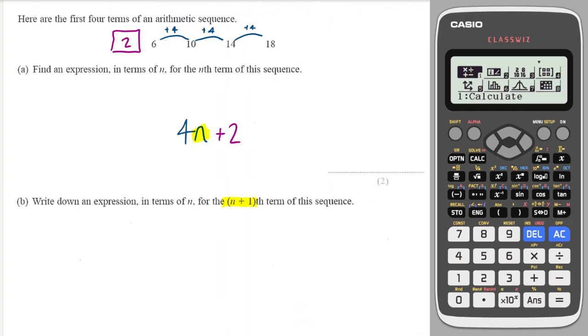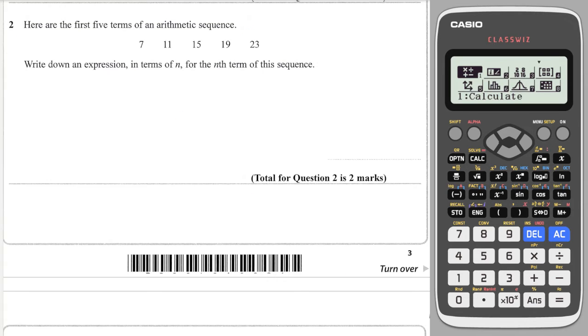So you write four, not n this time but (n+1) plus two, and then you might want to expand those brackets to get 4n + 4 + 2, which is equal to 4n + 6.